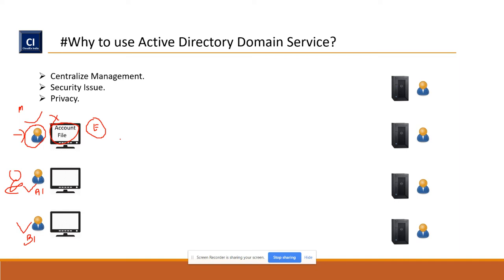In a workgroup or standalone environment, you face three main problems: lack of centralized management — you have to create users and groups on each and every system individually; whenever a password expires, you reset it from each system separately; and if you want to apply a common policy — like blocking pen drives — you have to repeat the same task on every machine. With 500 machines, that's 500 repetitions. There is no centralized control from one system to another.